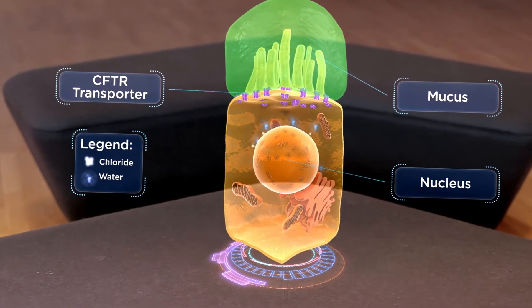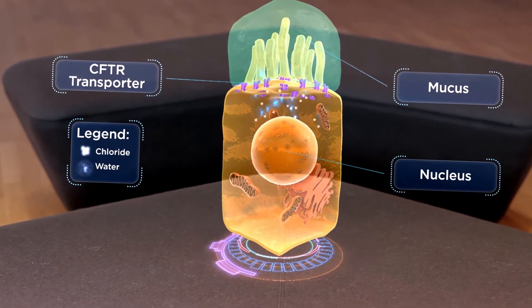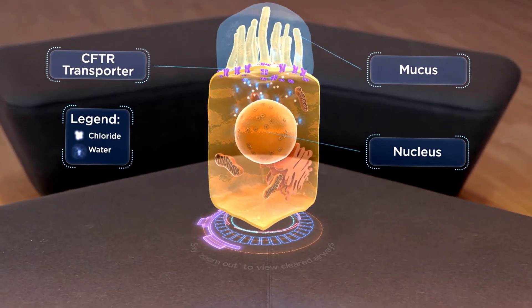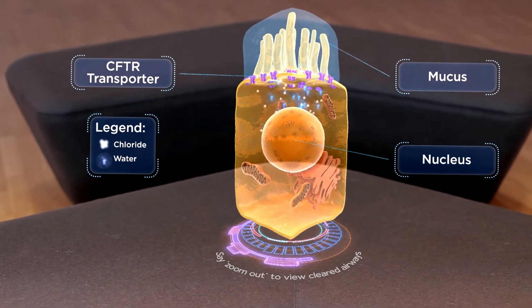With our mutation repaired, the CFTR protein is able to regulate the flow of chloride and thus water across the cell. Zoom out.